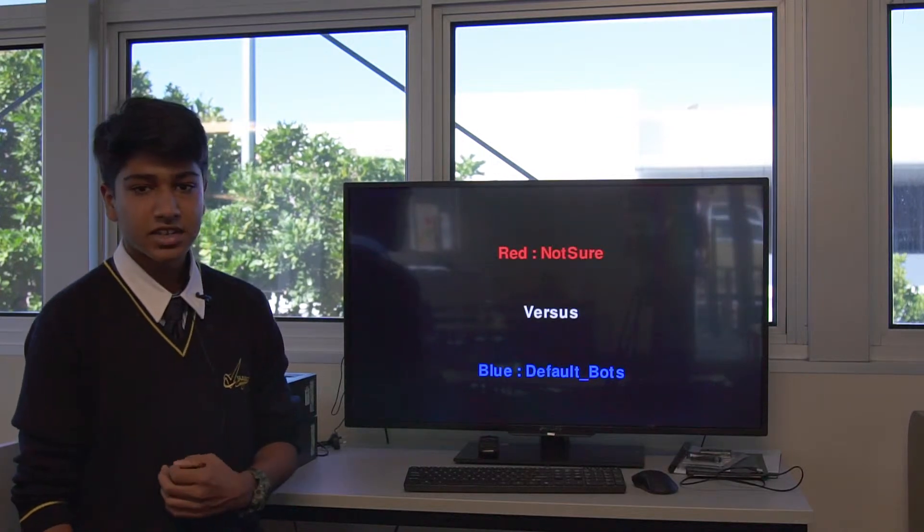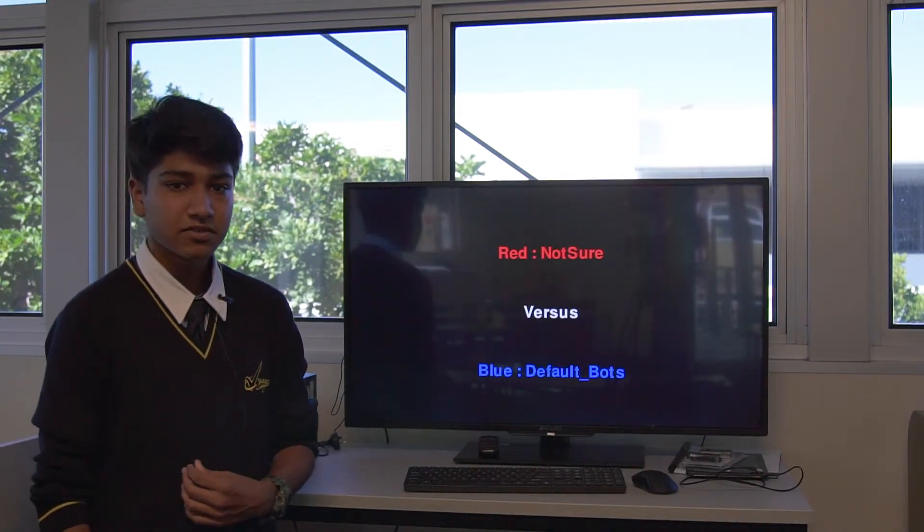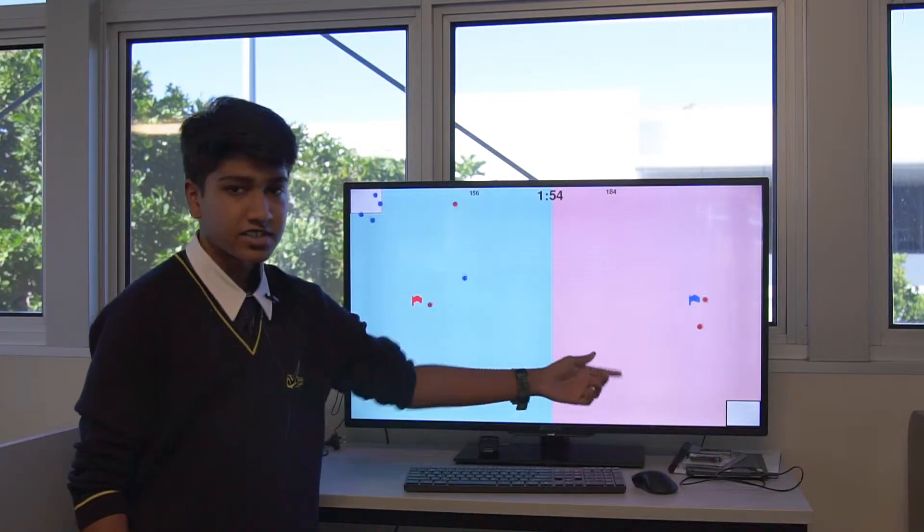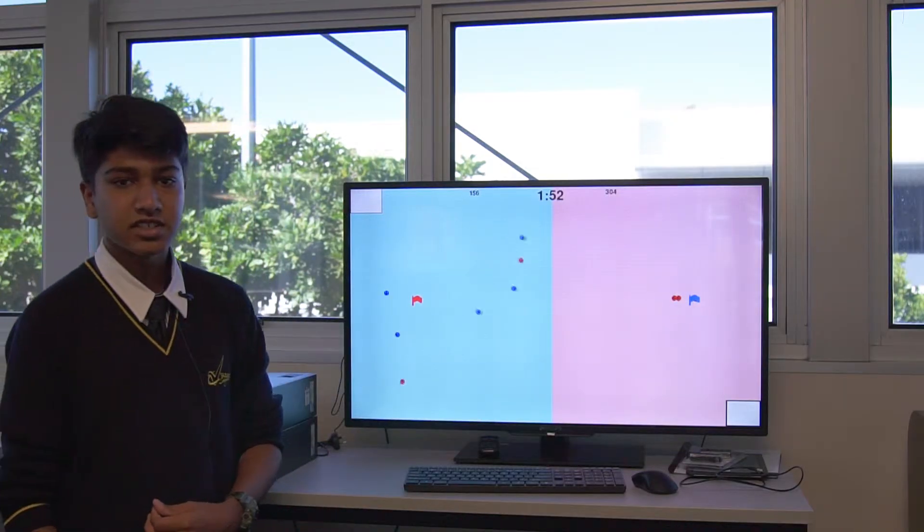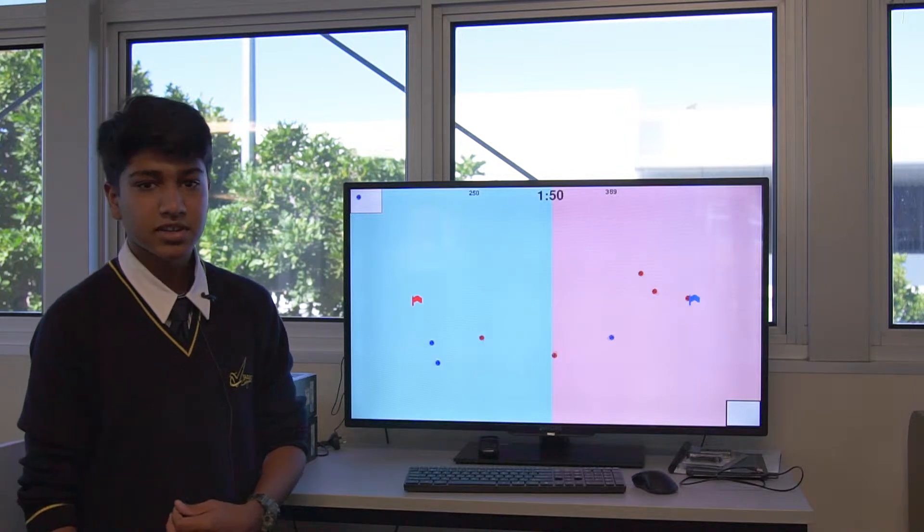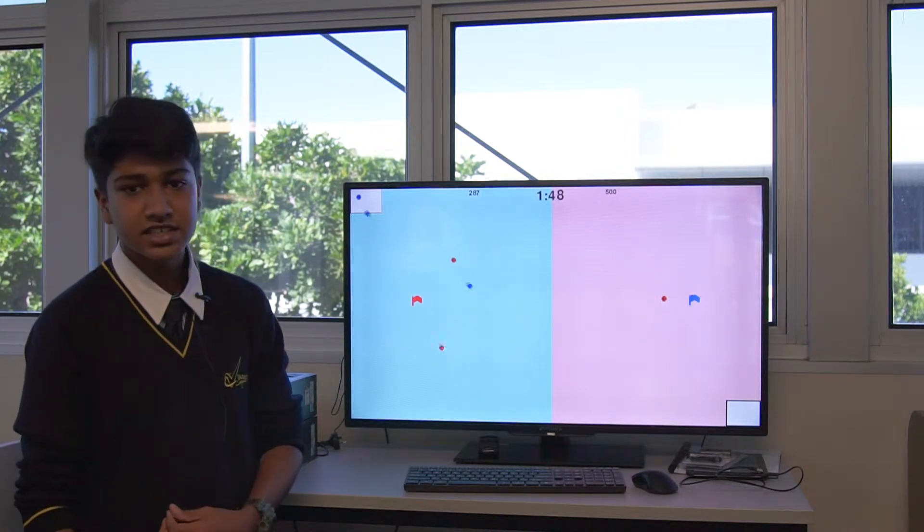This is done by going into the enemy territory, taking your flag, and bringing it onto your own side. If by any chance you get captured in the enemy's territory, you're sent to these two jails. When you're in these jails, your own team's jailbreak bot has to get you out by going into the jail.